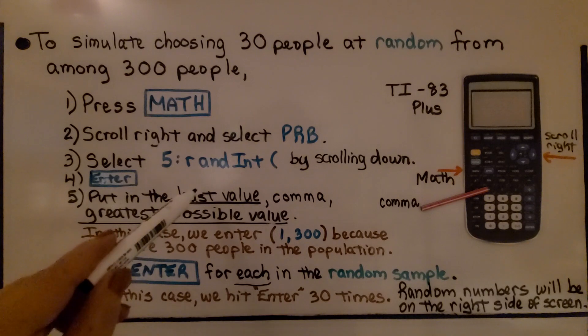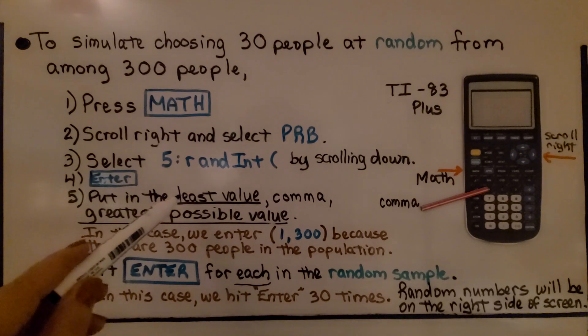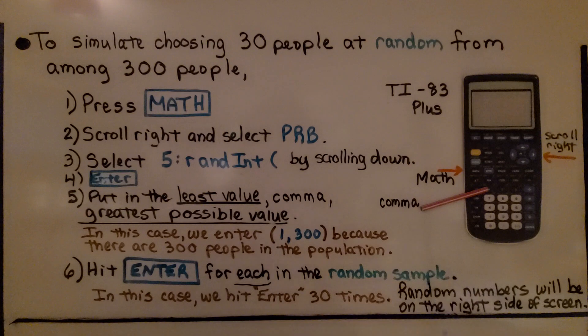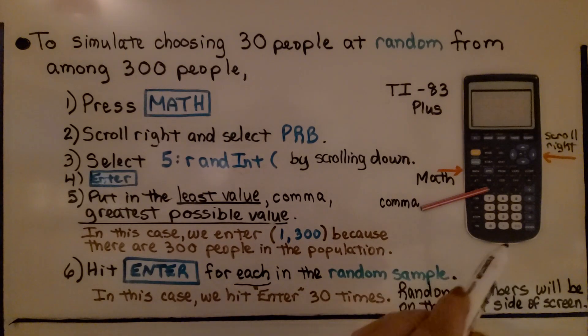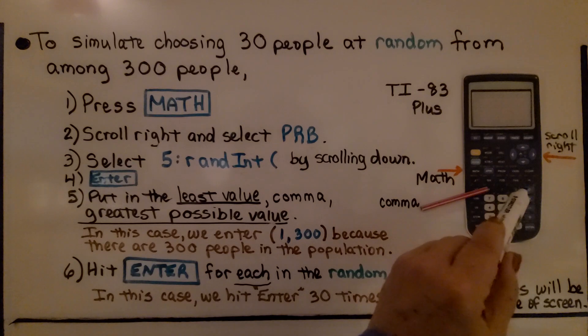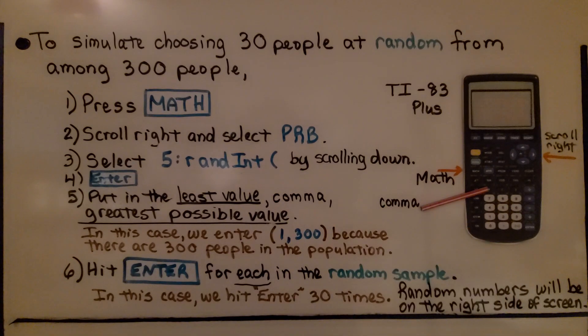Now we put in the least value, so that would be 1. Then we hit comma, which is right here. And then we put in 300. And we can hit the closed parentheses. In this case, we enter 1, 300 because there are 300 people in the population.